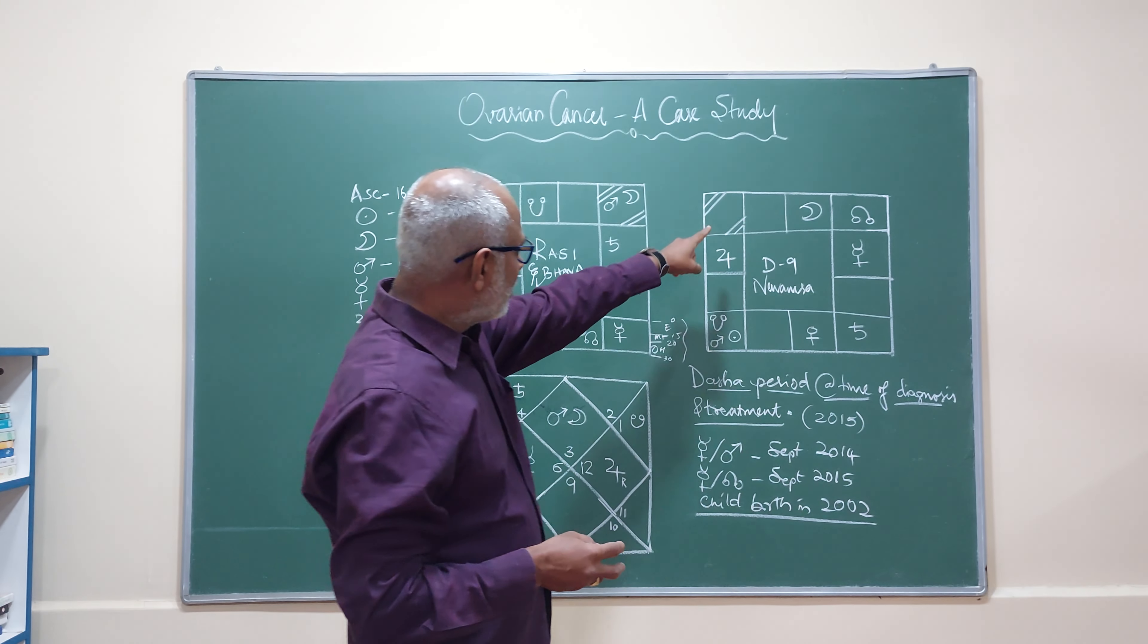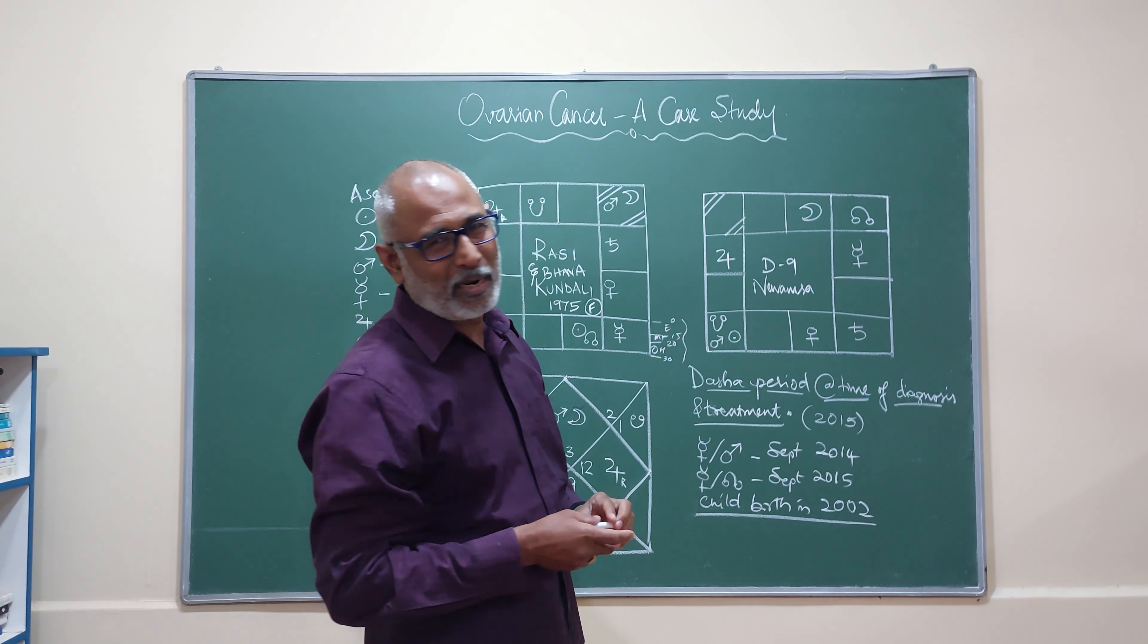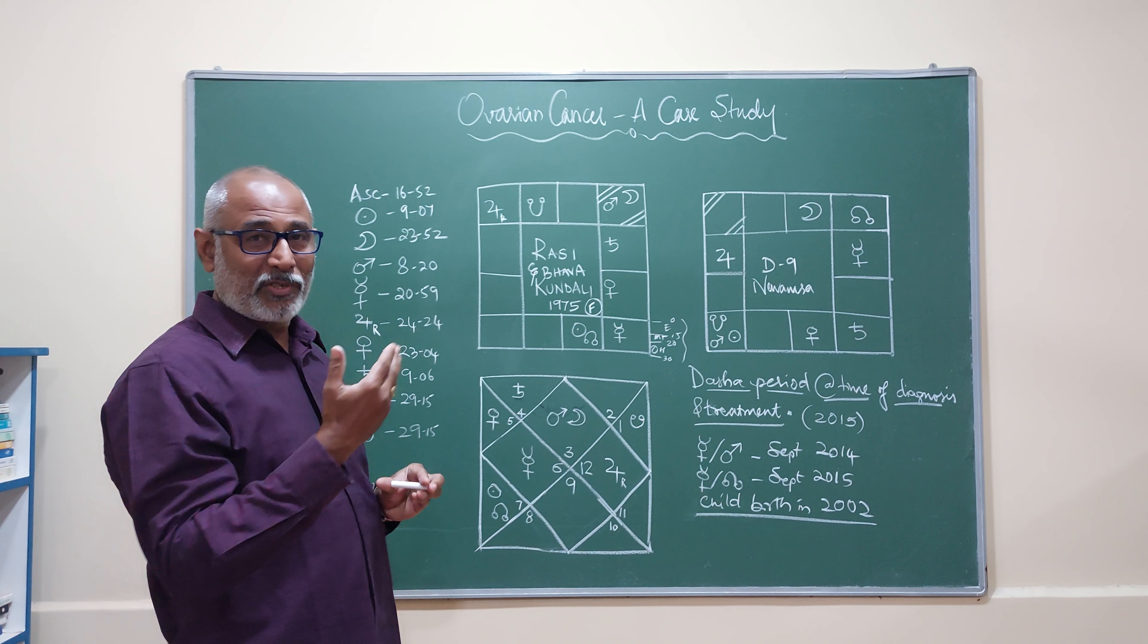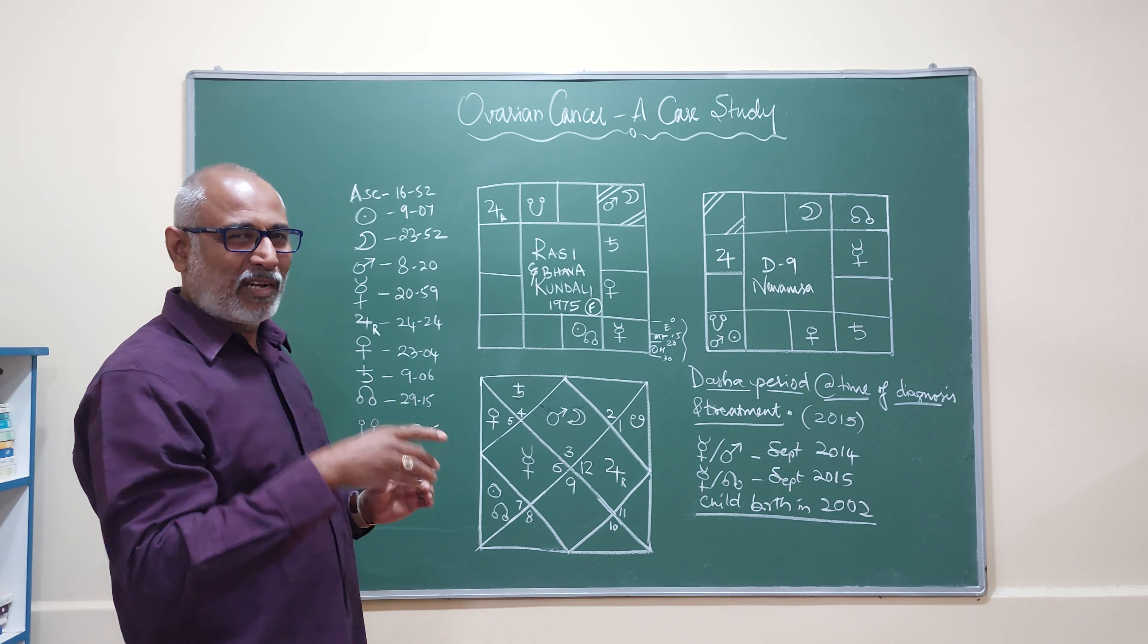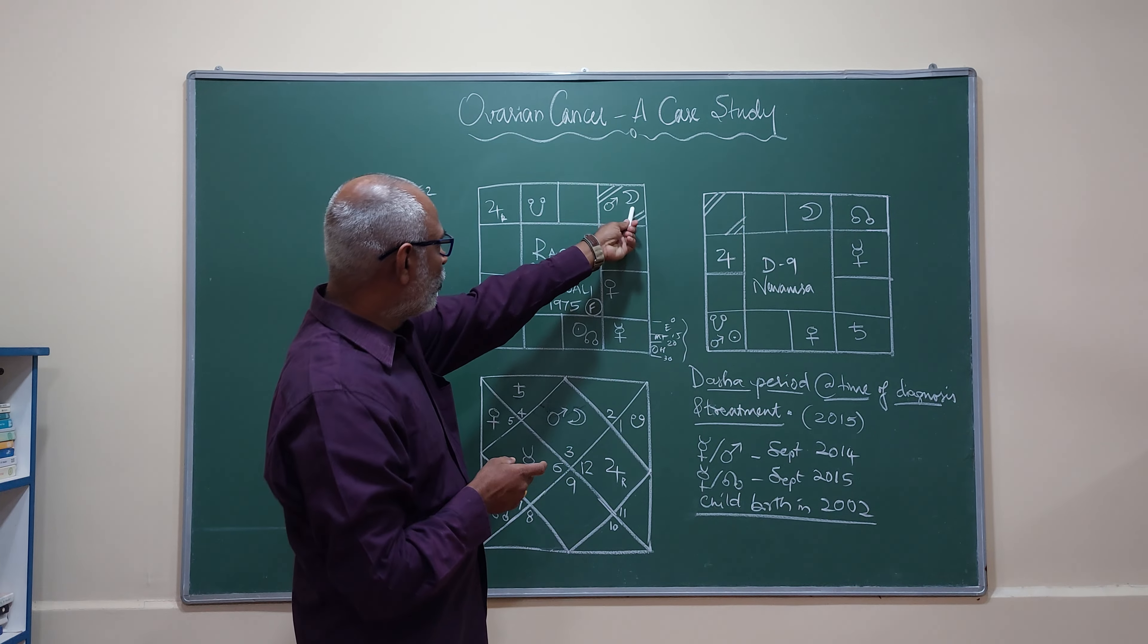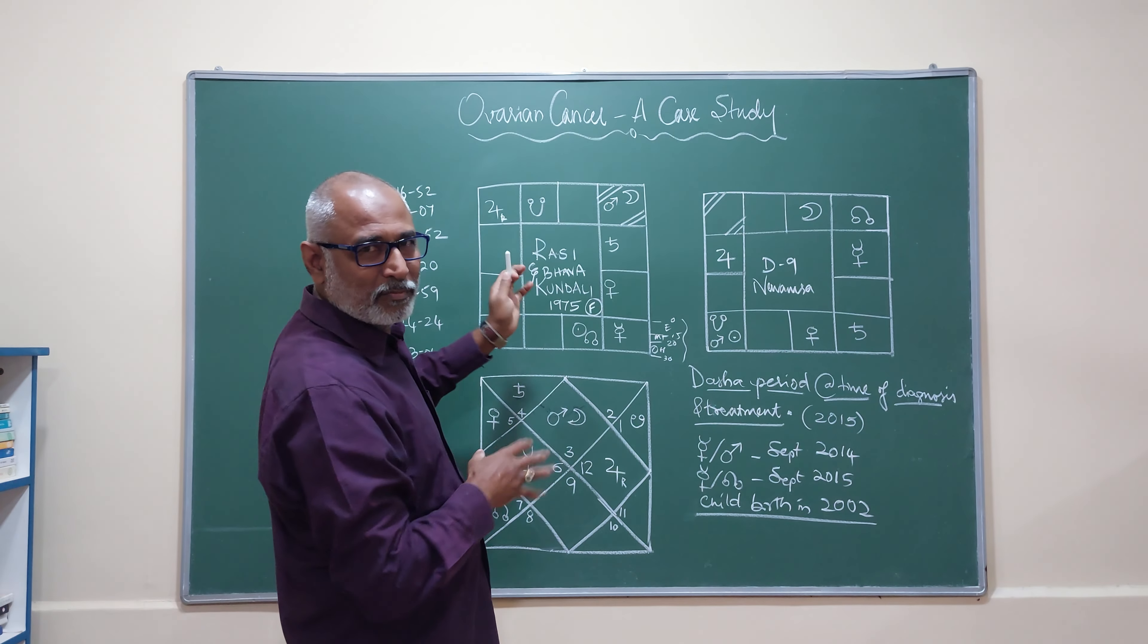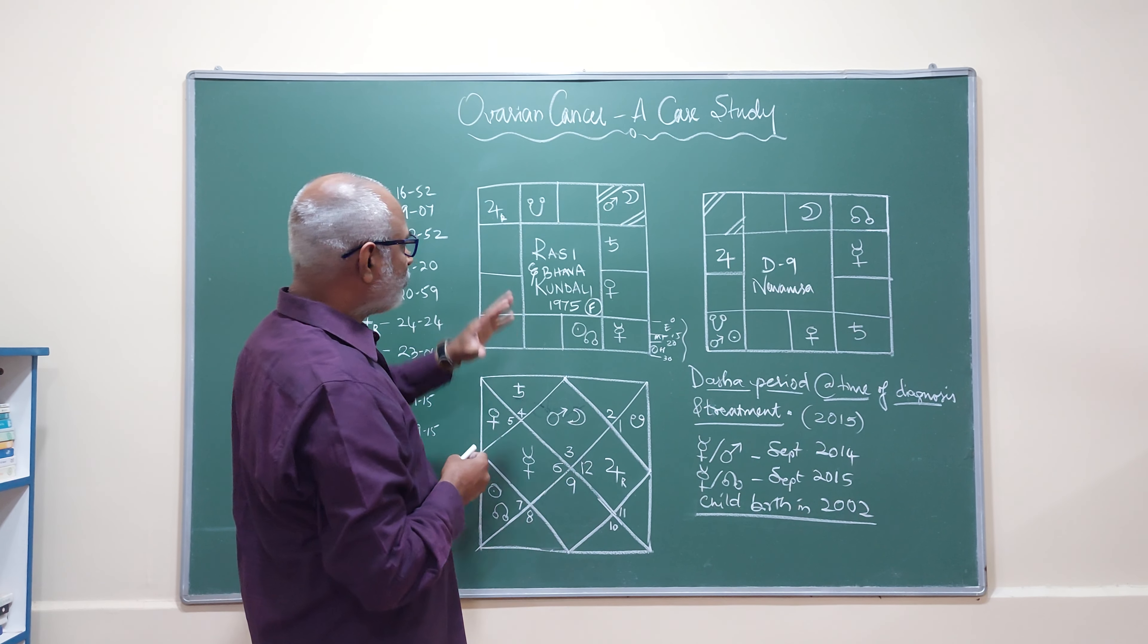Carrying on with the Navamsa. In the Navamsa the Lagna is falling in Pisces and these are the planetary positions. People are asking me once again that please write the names, why do you write the symbols. But once you start getting attached to the symbols, symbols are easy representations because they talk to you. The words will not talk to you. This is Mars, Moon, Saturn, Venus, Mercury, Sun, Rahu, Jupiter Retrograde and Ketu.